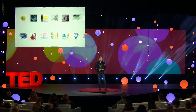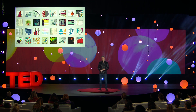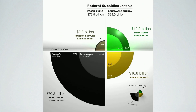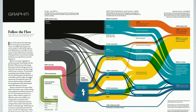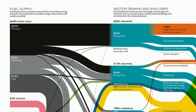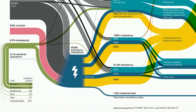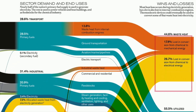I get excited when I get lots of data to play with, especially when it yields an interesting chart form. Nightingale's coxcomb was the inspiration to organize data on thousands of federal energy subsidies, scrutinizing the lack of investment in renewables over fossil fuels. This Sankey diagram illustrates the flow of energy through the U.S. economy, emphasizing how nearly half of the energy used is lost as waste heat.